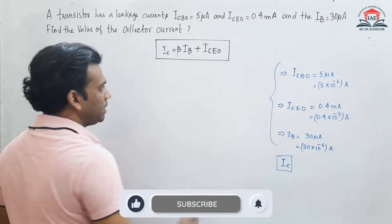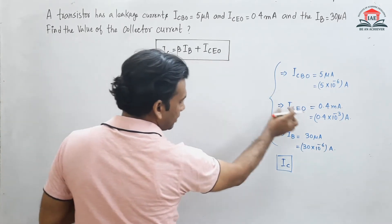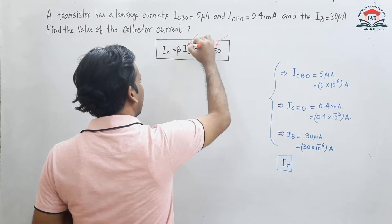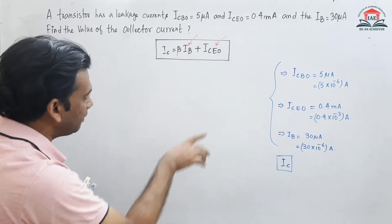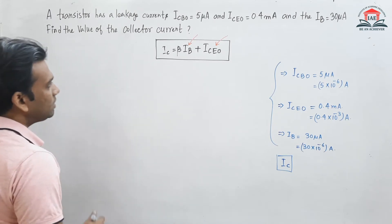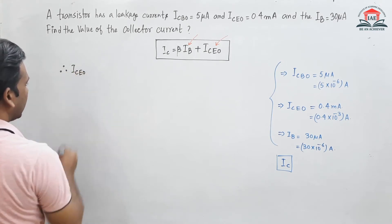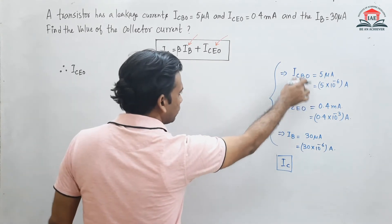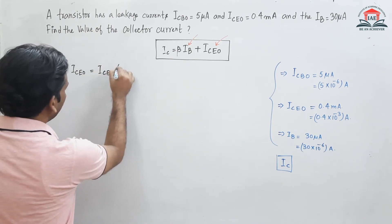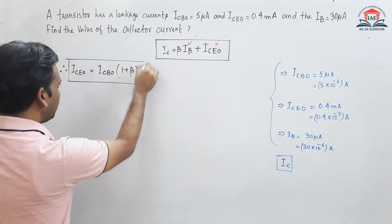ICEO is the collector-to-emitter current when the base is open. This ICEO current is given. IB value is also given, but we do not know the beta value, so we need to find it. We know the relation: ICEO equals ICBO into (1 + beta). This is the relation between ICEO and ICBO.